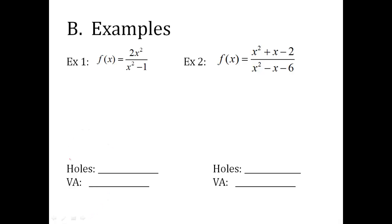So here's some examples. Let's solve for holes and vertical asymptotes. The first thing, remember, is to factor completely. So x squared over x squared minus one is x plus one times x minus one. There are no common factors here I can cancel.